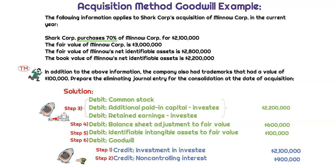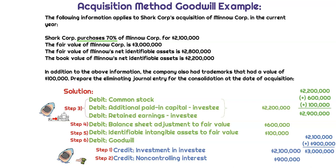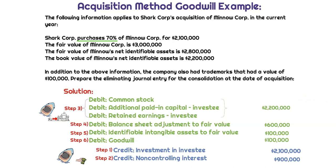Now step 6 — plug and chug. Credit side totals $3 million ($2.1M investment + $0.9M NCI). Debit side totals $2.9 million ($2.2M book value + $600K adjustment + $100K intangibles). The credit side exceeds the debit side by $100,000, so we plug $100,000 to goodwill on the debit side. And voilà — it balances.